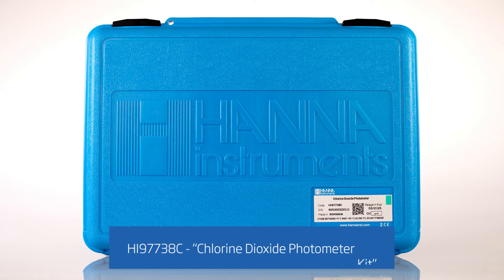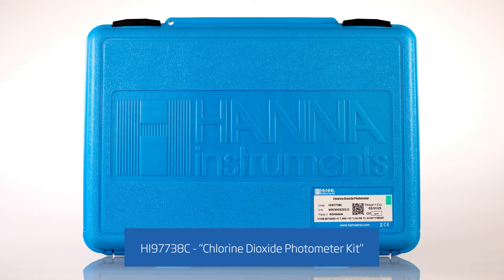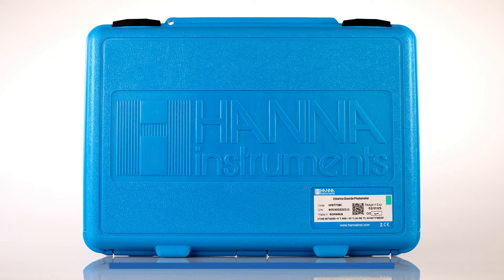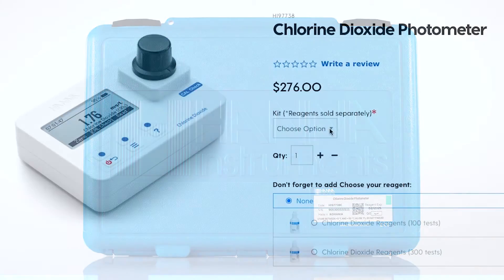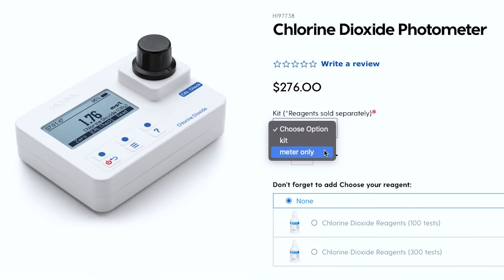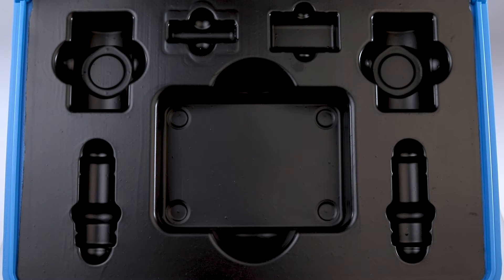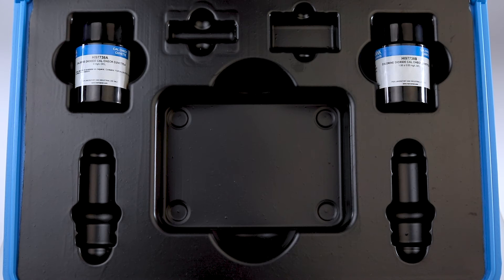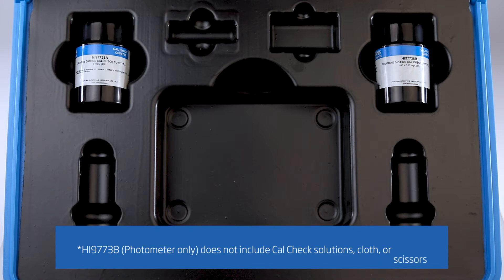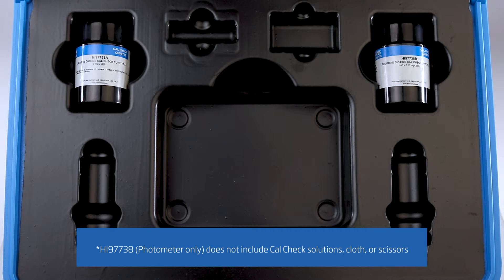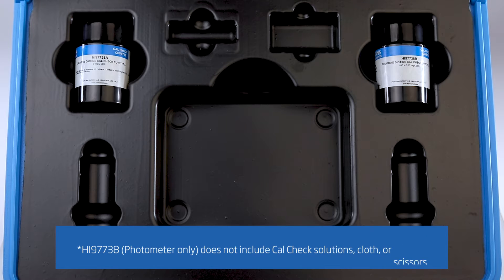This video features the HI-97738C Chlorine Dioxide Photometer Kit. This can also be purchased as a standalone meter using the part number HI-97738. The kit is delivered in a rugged carrying case supplied with CalCheck solutions for cuvettes A and B. For non-kit users, these can be purchased together under part number HI-96738-11.